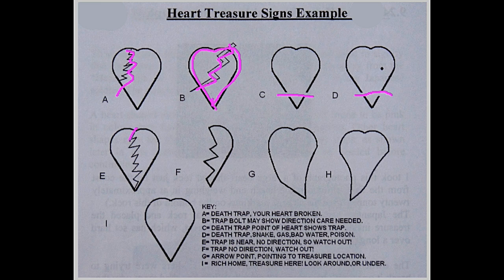Letter C is the same. If the heart is cut like D, it's dangerous. There's a trap - if not water trap, there's poison or gas. That's what a cut heart means.